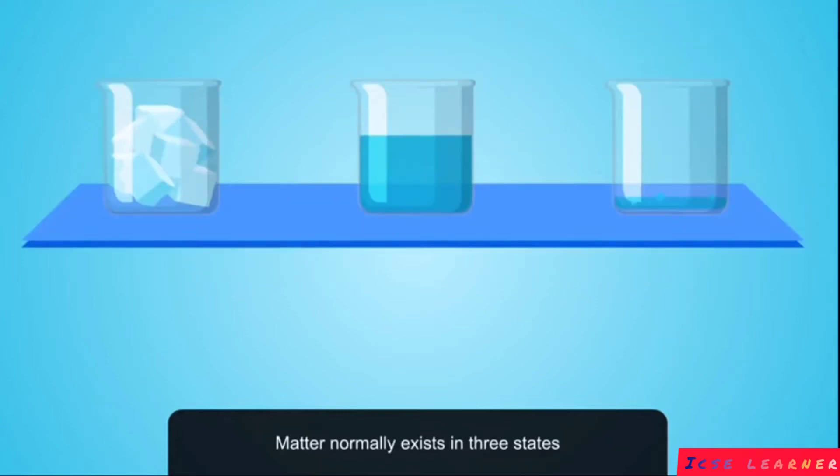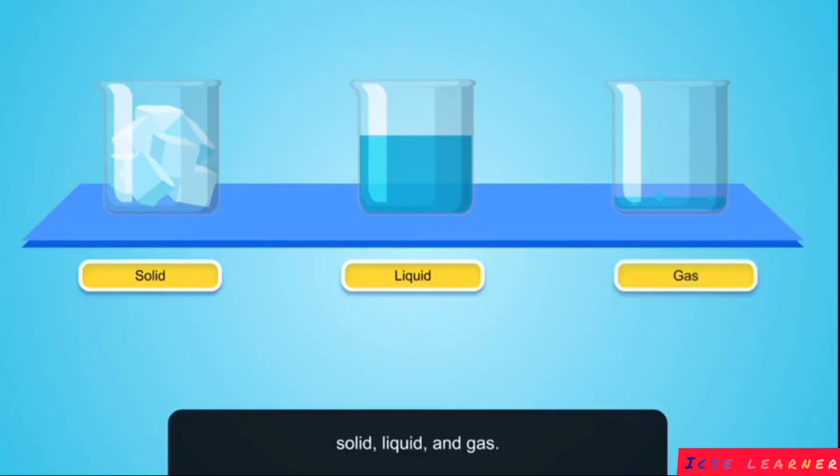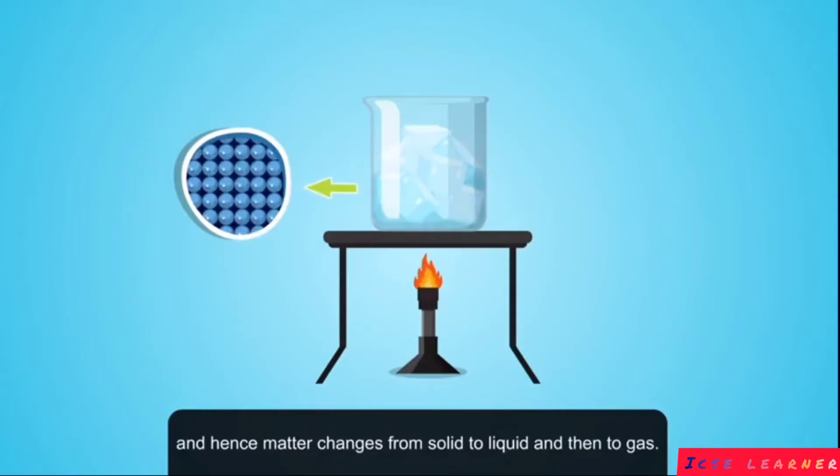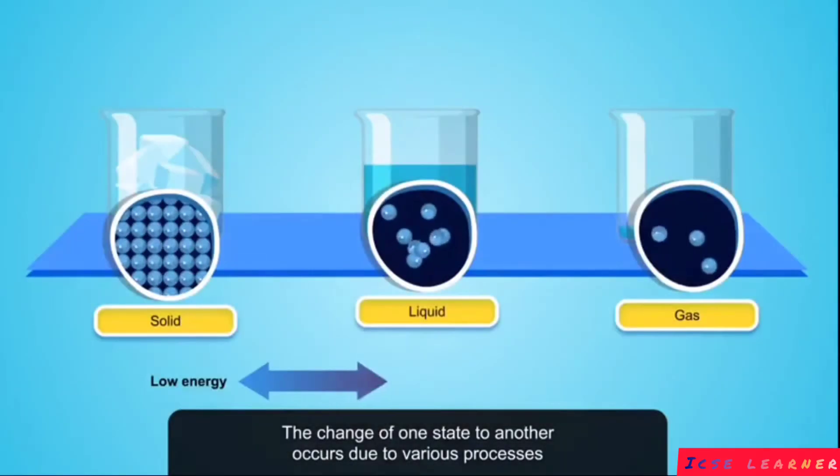Matter normally exists in three states: solid, liquid, and gas. As the temperature rises, the random movement of the particles increases and hence matter changes from solid to liquid and then to gas. The change of one state to another occurs due to various processes.